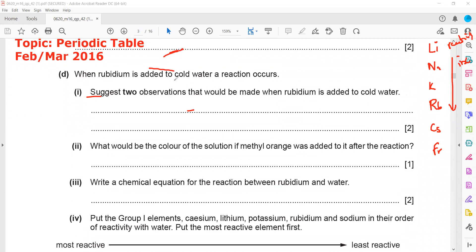The next one is when rubidium is added to cold water, a reaction occurs. State two observations made when rubidium is added to cold water. In a physical property, you cannot say alkaline. Because physical property refers to melting point, boiling point, density, conduction of electricity, hardness, texture, soft or hard, or shiny or dull surface. These are the physical properties.